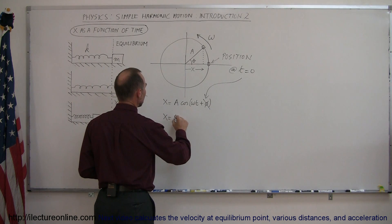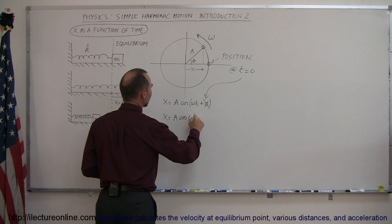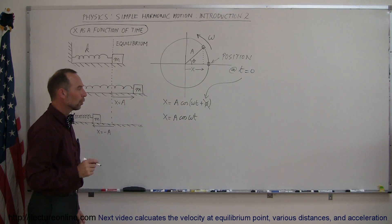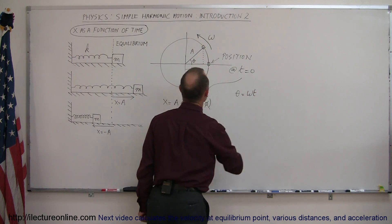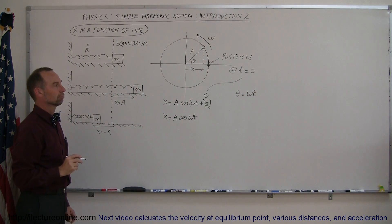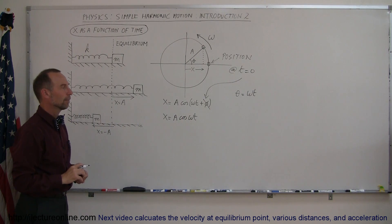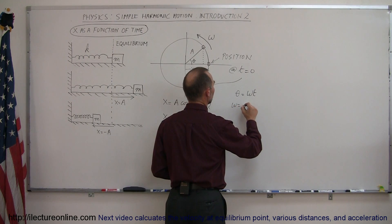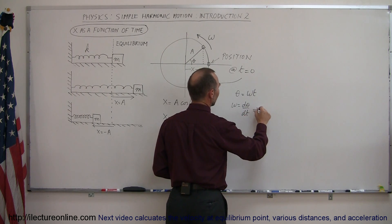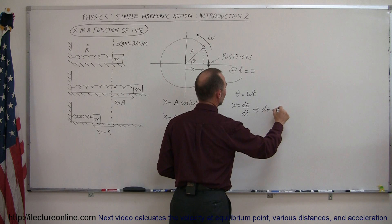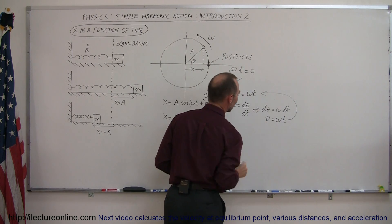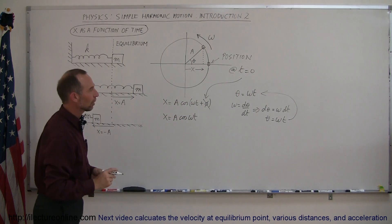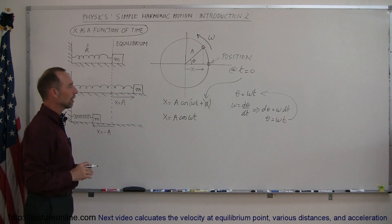So we can say that x is equal to a times the cosine of omega t. Note that theta equals omega t by definition, because omega equals delta theta over delta t, so d theta equals omega dt, and therefore theta equals omega times t. This is just a quick introduction to the relationship between angle and angular velocity.